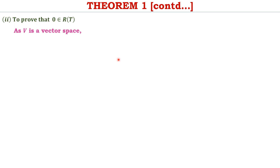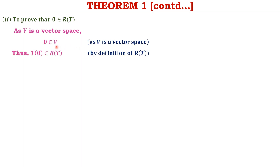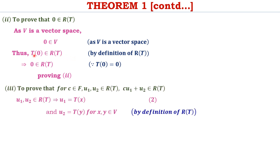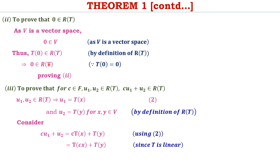To prove the second condition, we show that 0 belongs to R(T). Since V is a vector space, the additive identity 0 is surely an element of V. As 0 belongs to V, T of 0 will belong to R(T) by definition. But by a property of linear transformations, T of 0 equals 0, and thus we conclude that 0 belongs to R(T), proving the second condition.